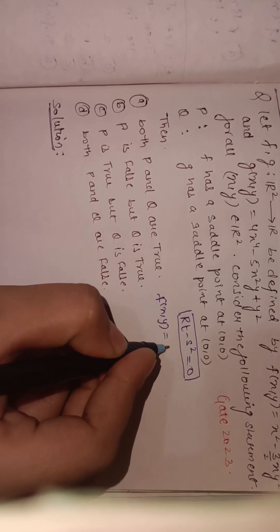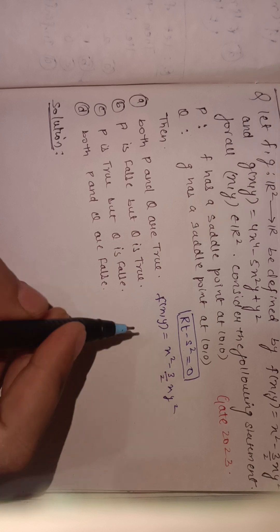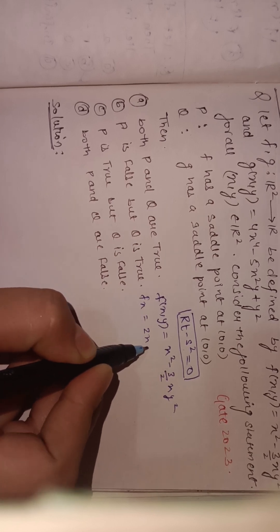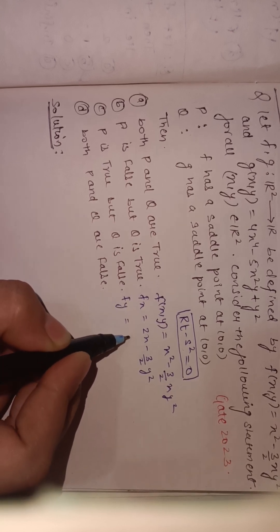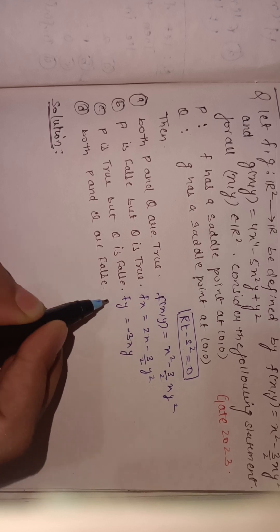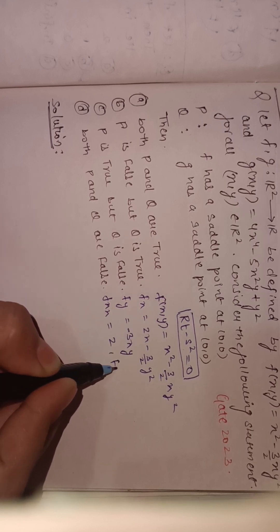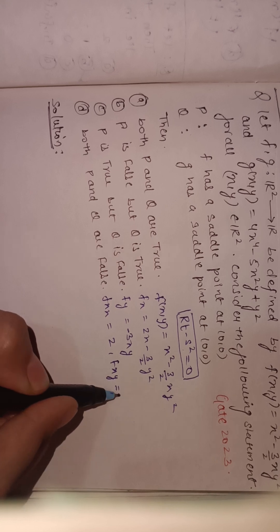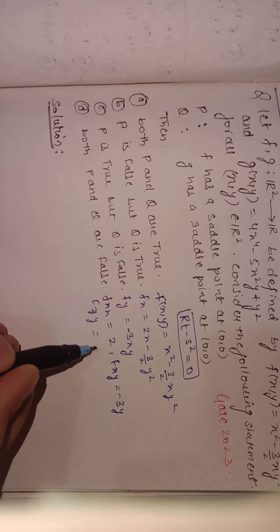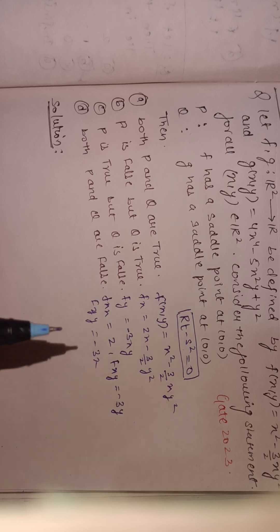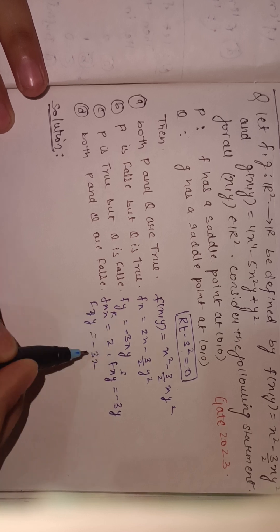f(x,y) = x² - (3/2)xy². We find: fₓ = 2x - (3/2)y², f_y = -3xy, f_{xx} = 2, f_{xy} = -3y, and f_{yy} = -3x. Here f_{xx} is our r, f_{xy} is our s, and f_{yy} is our t.